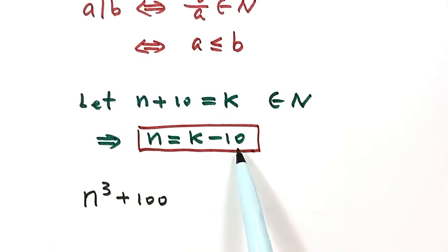Then use k minus 10 to replace n. And here, just k minus 10 to the third plus 100.